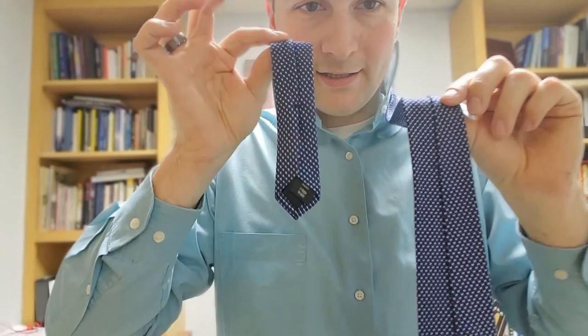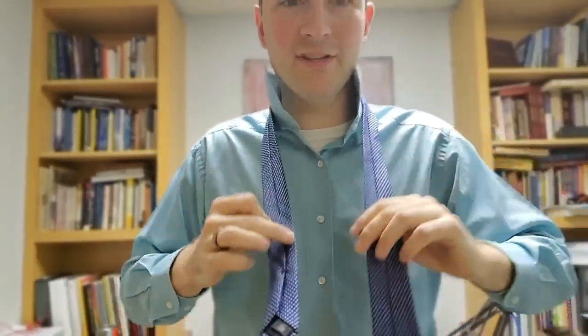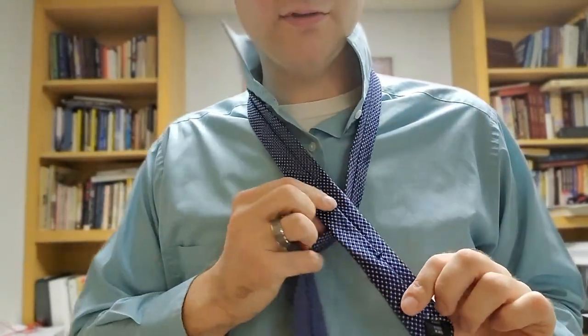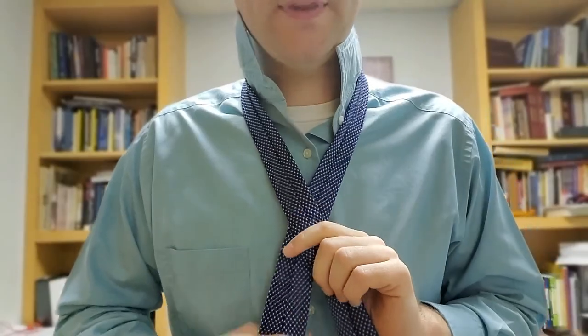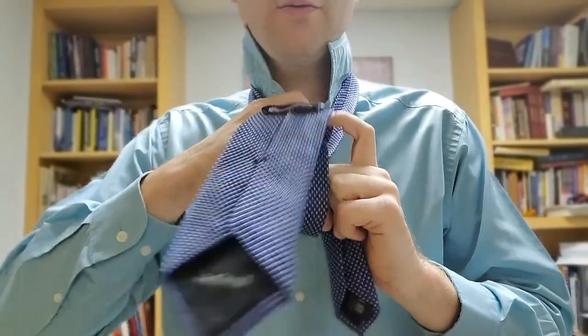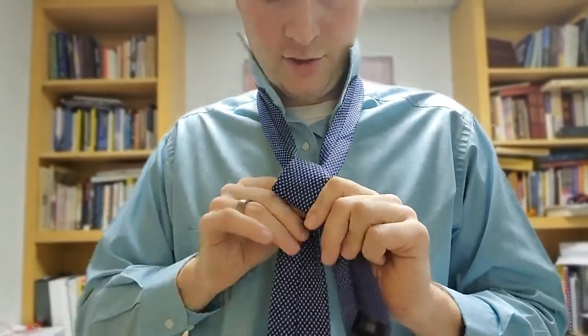So the tags and the seam is facing out. And then instead of going over with the long end, you're going to go over with the short end. Let me step a little closer. You can see this. Go over with the short end. Take the fat end. Wrap it around the short end.